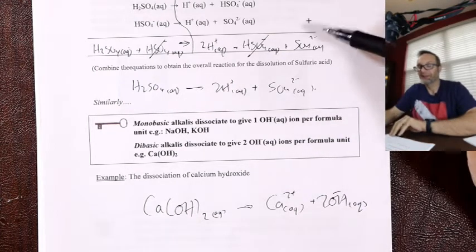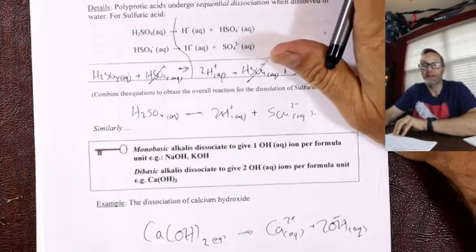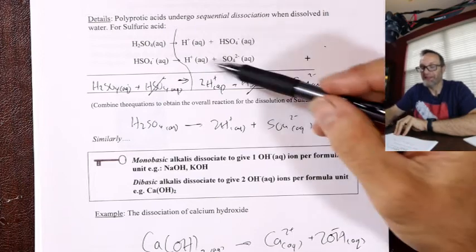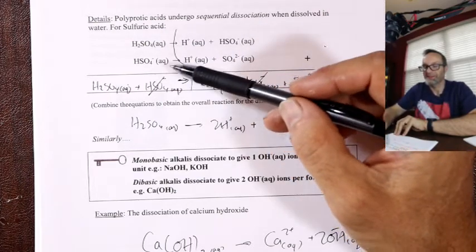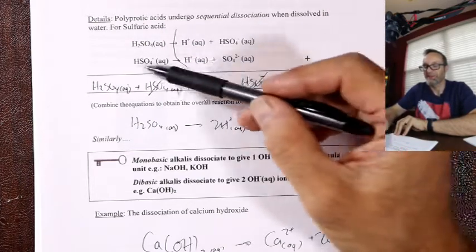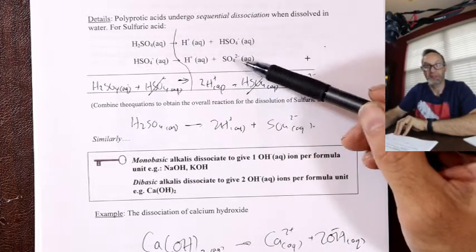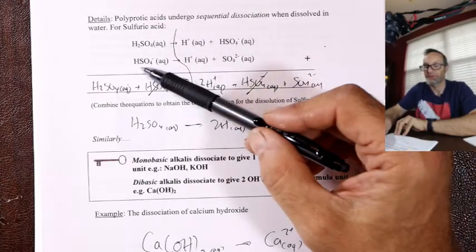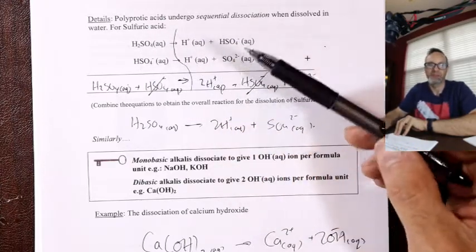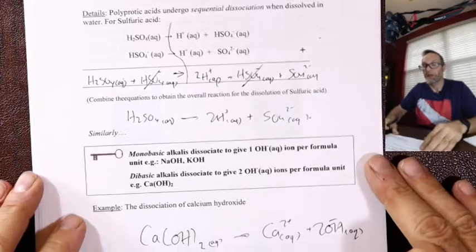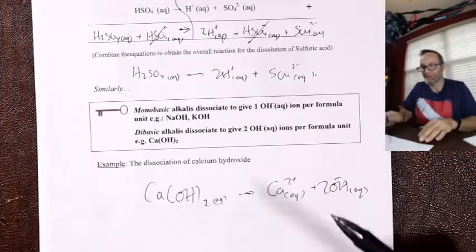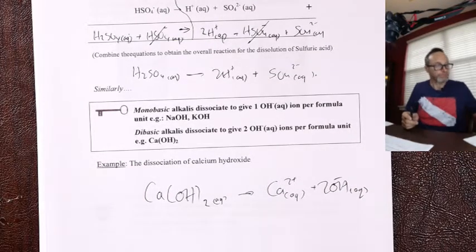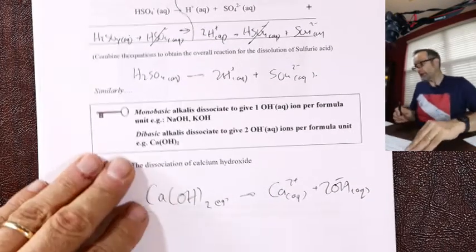So acids are a bit weird — their molecular character plays into this sequential dissociation situation. They don't act like pure ionic compounds; they go through sequential steps. Bases, on the other hand, are just pure ions and dissolve straight away.